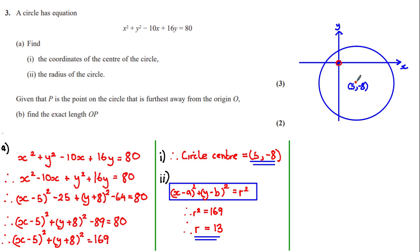When drawing a circle, it's very important to keep in mind the radius, because this will determine whether the circle intersects with the coordinate axis or not. The horizontal distance between the center of the circle and the y-axis is 5, and since the radius is 13, which is greater than 5, the circle is going to go through the y-axis. The vertical distance between the circle center and the x-axis is 8, and since the radius 13 is greater than 8, the circle also goes through the x-axis.